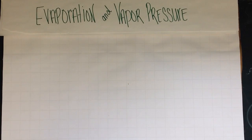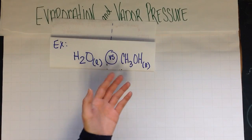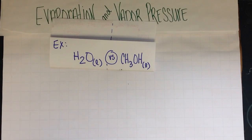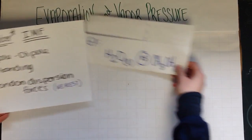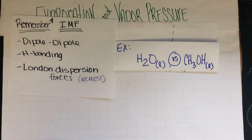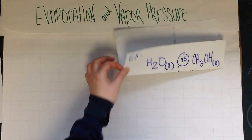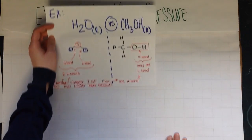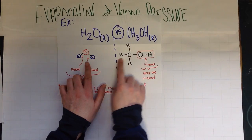Let's take a look at an example problem. What if I give you these two molecules: water in a liquid phase and CH₃OH as a liquid. CH₃OH is known as methanol. What's important is to remember your intermolecular forces, so take out your notes and ask yourself which types of intermolecular forces are happening. The easiest thing to do is to think about how your molecule looks when drawn. Here I have a water molecule, and here's a methanol molecule.